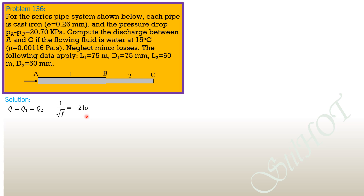The Colebrook equation is: 1 over square root of f equals negative 2 log of quantity (e over 3.7d) plus (2.51 over Reynolds number times square root of f). For pipe 1, the larger diameter pipe, I will assume Reynolds number of 80,000. For pipe 2, because the diameter is smaller and mean velocity is higher, I will assume a higher Reynolds number of 100,000.